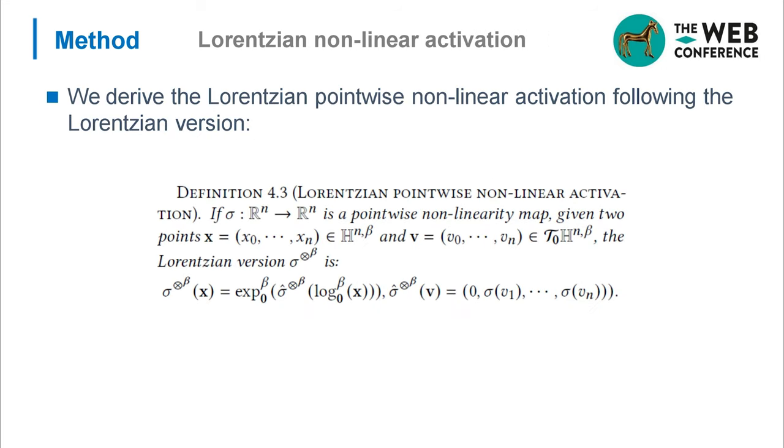We also define Lorentzian pointwise nonlinear activation following the Lorentzian version. We transform the features into tangent space and apply Euclidean nonlinear activation at the last n coordinates to make sure the features still live in the tangent space.